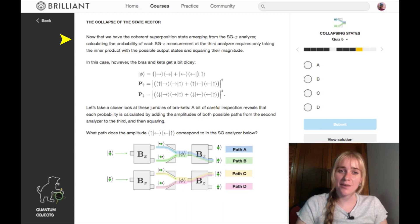So now that we have our coherent superposition state emerging from the second analyzer, to calculate the probability of each measurement in the third analyzer requires taking the inner product with the possible output states and squaring their magnitude. So that's how we've been finding the probabilities - doing this inner product between the collapsed state and what you're using, and squaring the magnitude of that. Remember that the inner product is like the overlap between two things. So if there's a lot of overlap between two different things, there's a high probability of that occurring.